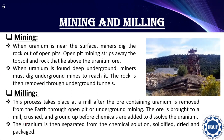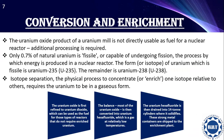The ore is brought to a mill, crushed and ground before chemicals are added to dissolve the uranium. The uranium is then separated from the chemical solution, solidified, dried, and packaged. After milling, the product contains only 0.7% natural uranium that is fissile — capable of sustaining a chain reaction — the process by which energy is produced.